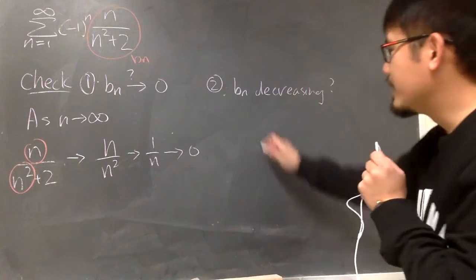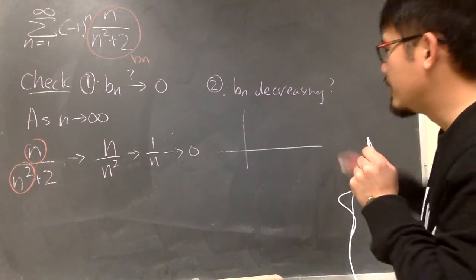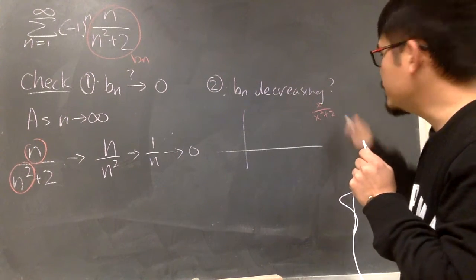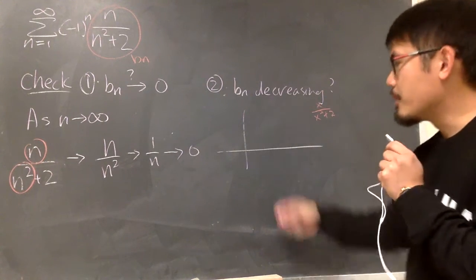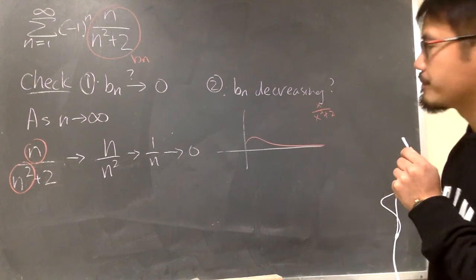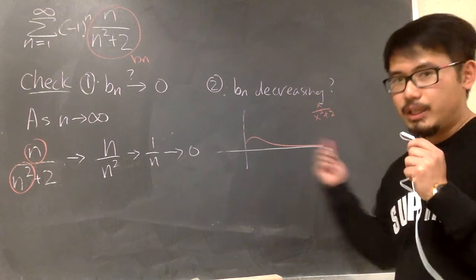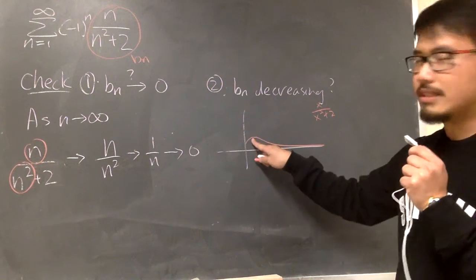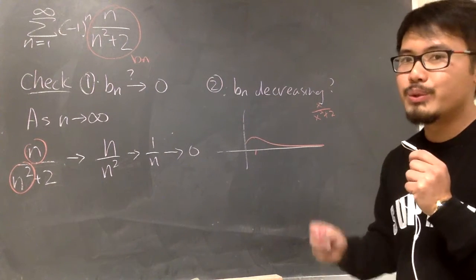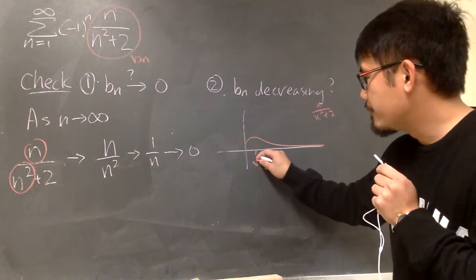Let me show you the graph. If you want to graph x over x squared plus 2, you are going to end up with something like this. Okay? It is decreasing. And you may be wondering, what's this point, the maximum point? It happens at x is equal to square root of 2.